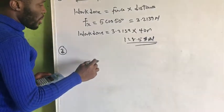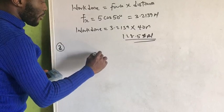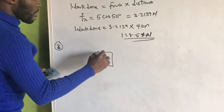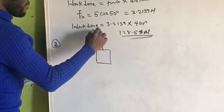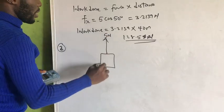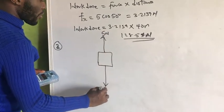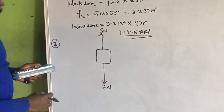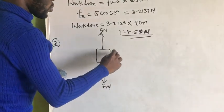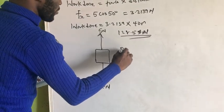Alright. Let's say, we have something like this. You have a force of 5 newtons here. You have a force of 7 newtons here. And, we are told to find the resultant force.